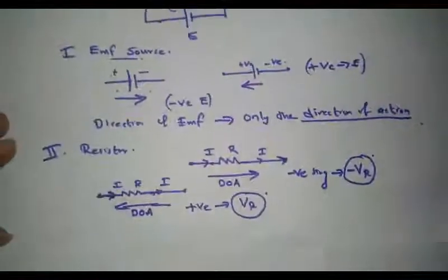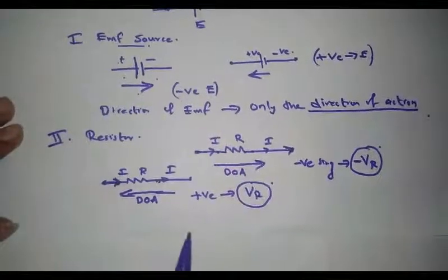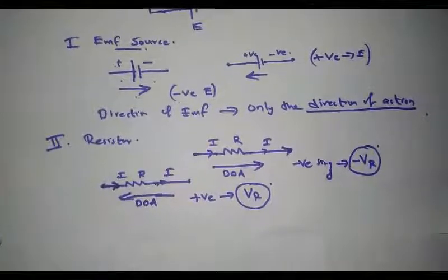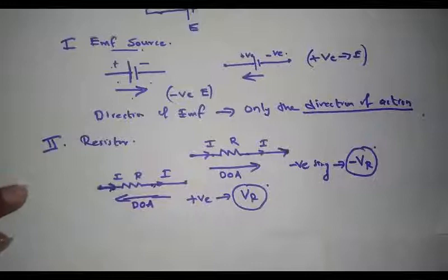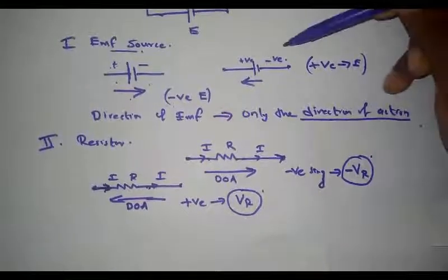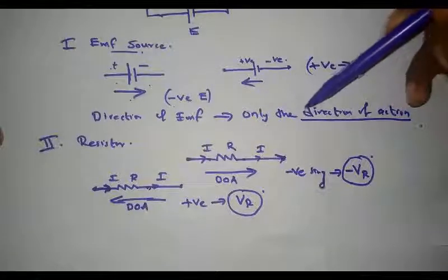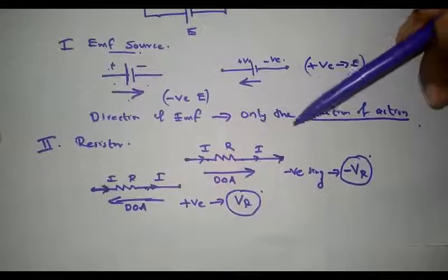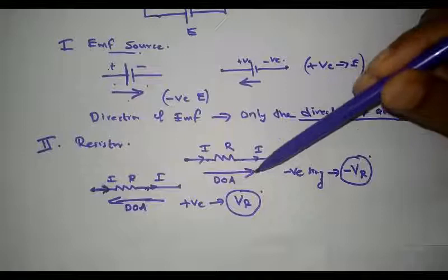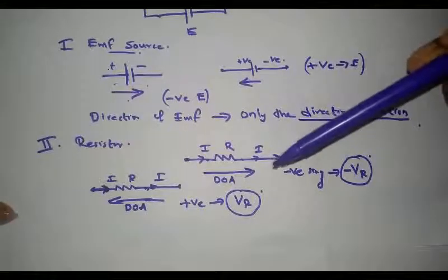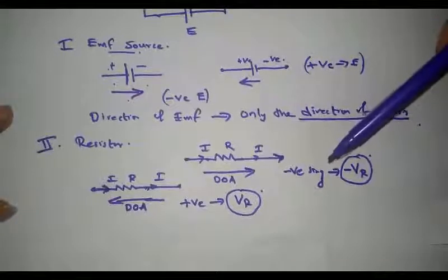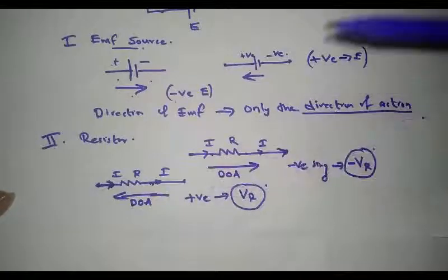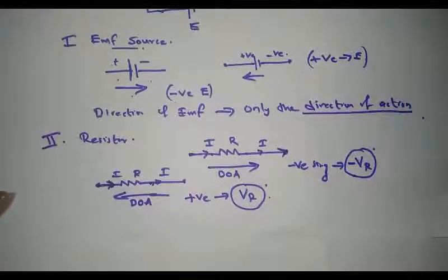These are the basic conditions to follow while assigning signs to EMF sources and resistors in a simple electric circuit. To conclude: the sign of an EMF source depends only on the direction of action. For a resistor, we consider both the direction of current and the direction of action. If the direction of current and direction of action are the same, assign a negative sign to the voltage drop. If they are opposite, assign a positive sign to the voltage drop.